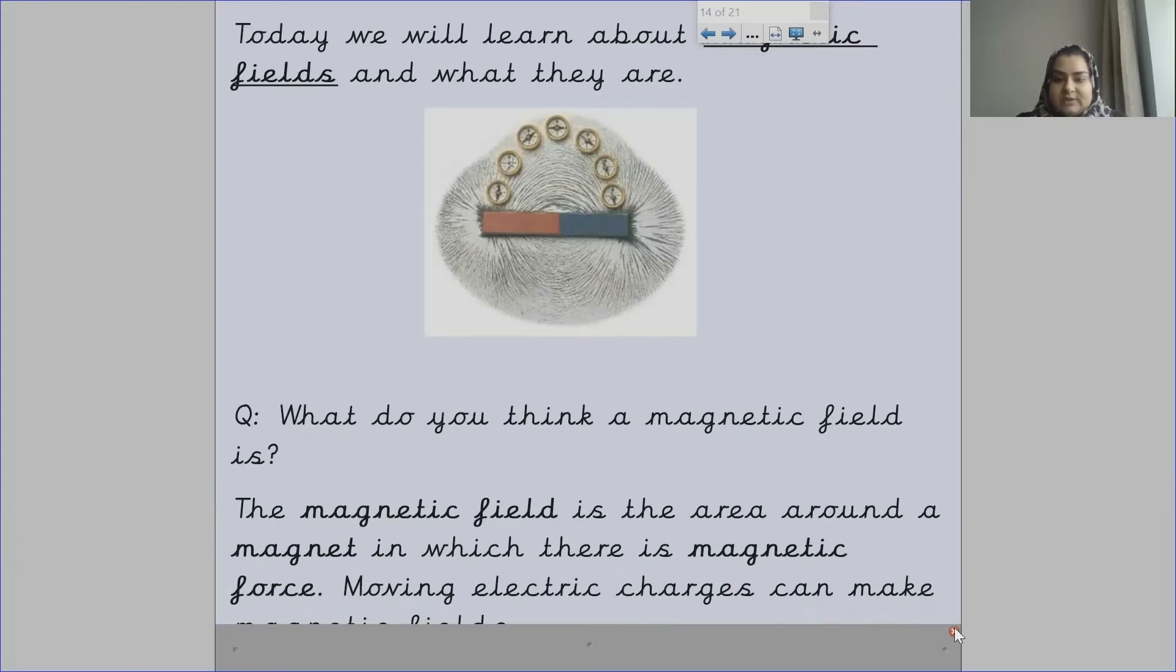A magnetic field is the area around a magnet in which there is magnetic force. Moving electric charges can make magnetic fields.